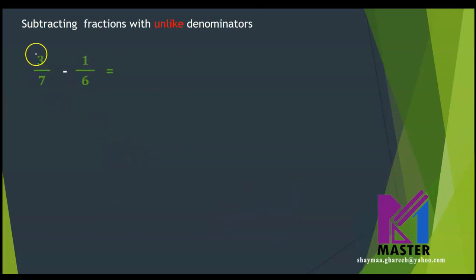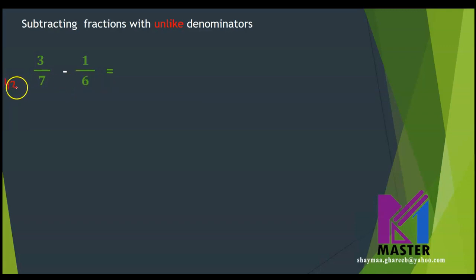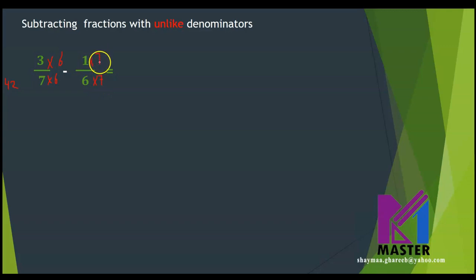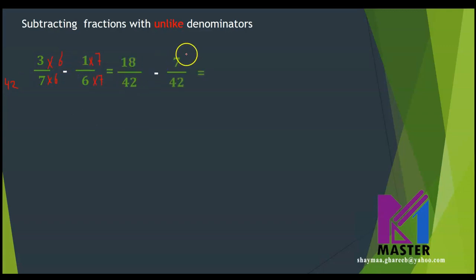Let's do more examples. 3 over 7 minus 1 over 6. The least common multiple between 7 and 6 is 42. So the 7 becomes 42 by multiplying by 6 up and down, and the 6 becomes 42 by multiplying by 7 up and down. The new fractions will be 3 times 6, which is 18 over 42, minus 7 over 42. 18 minus 7 equals 11 over 42. Can I simplify it? No — this is the simplest form.